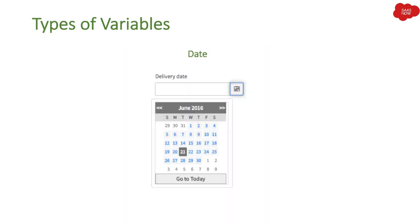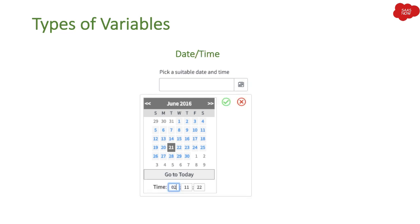The next variable is Date. If you want users to input a date, you select the Date variable. Then we have Date and Time — if you want users to fill in both a date and a time, you select the Date and Time type of variable.